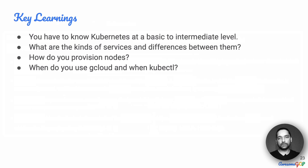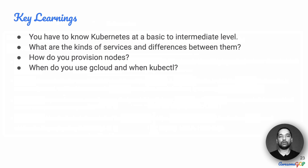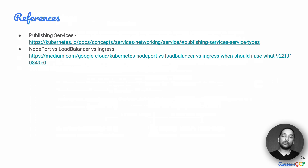What are the key learnings from this question? You have to know Kubernetes at a basic to intermediate level. You have to know the different kinds of services and the differences between them. You also have to know how to provision nodes and set up services on those nodes. Also know the difference between gcloud and kubectl, and which one you use under which circumstance. There are also a couple of references on how to publish services, the different kinds of services, and a nice article on the difference between NodePort, LoadBalancer, and ingress.